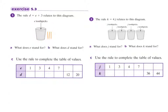So that's pretty easy. Now it says use the rule to complete the table of values. So what's our rule? I'm going to write the rule down here: E plus 3. So there's our rule. So now I've got to fill this in. When E equals 1, I just imagine if I put a 1 in there, so that's 1 plus 3. What's 1 plus 3? It's 4.